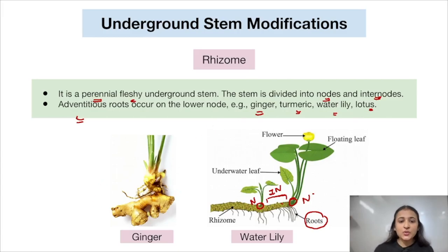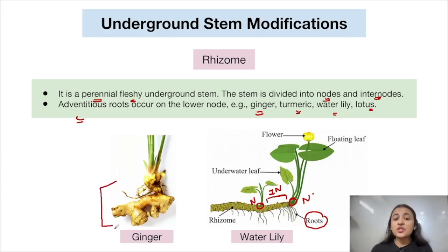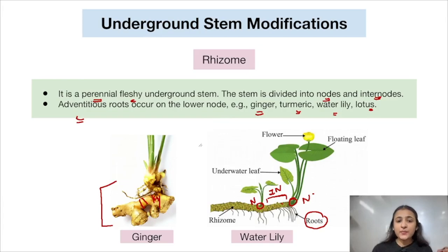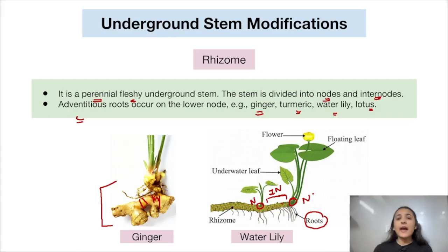Now let us look at the tuber. The potato that you consume is a tuber — an underground stem modification. It is not a fruit; it is the stem that we are consuming in the form of potato.